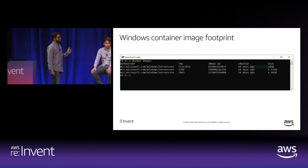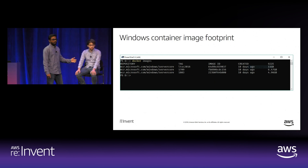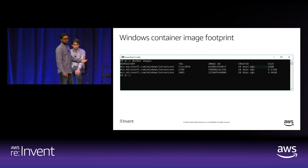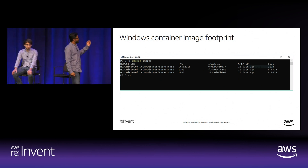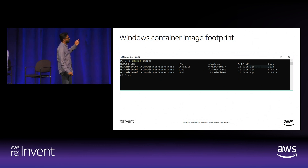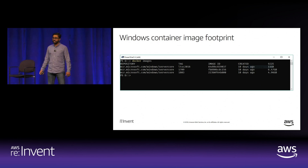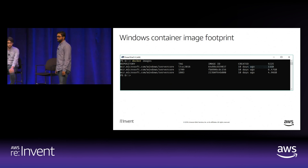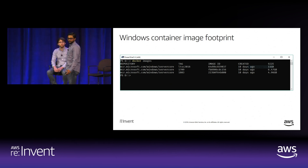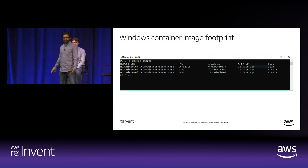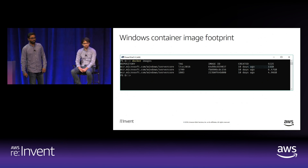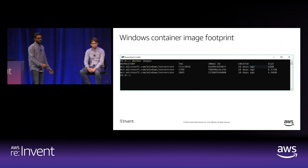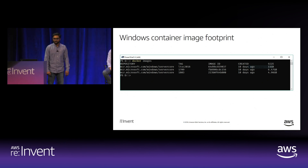Windows Server containers have improved significantly over the past three years. In 2016 the image was about 11 gigabytes; now it's less than half of that at around 5 gigabytes. That's still a lot in the container world—some containers are just 10 megabytes or even less.